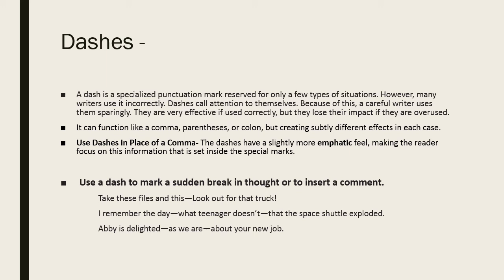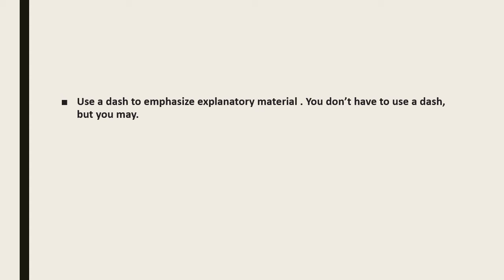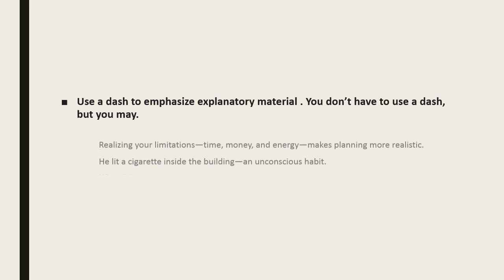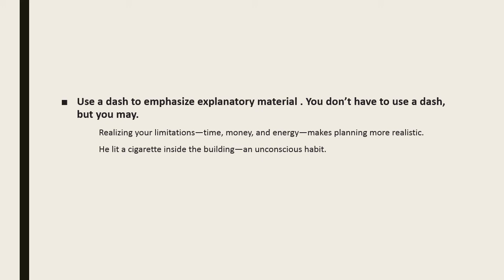'Abby is delighted about a new job — and we are so —' shows how an inserted comment is preceded and followed by a dash. We also use a dash to emphasize explanatory material. For example: 'Realizing your limitations — time, money, and energy — makes planning more realistic.' The explanatory list is set off by dashes. Another example: 'He lit a cigarette inside the building — an unconscious habit.' The phrase 'an unconscious habit' is explanatory material emphasized by the dash.